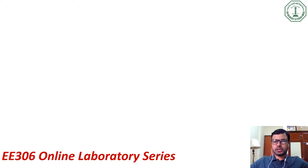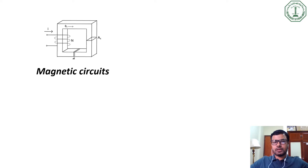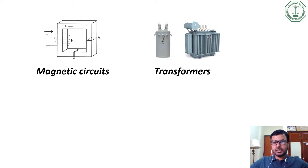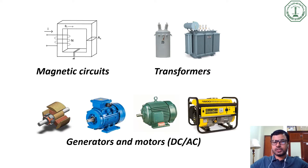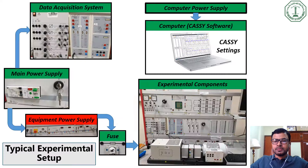Hello everyone, welcome back to our EE306 online lab series. The main topic of this lab are the magnetic circuits, transformers, generators and motors as we have discussed in our previous class. We have also shown you the workstation and the main components of this lab.